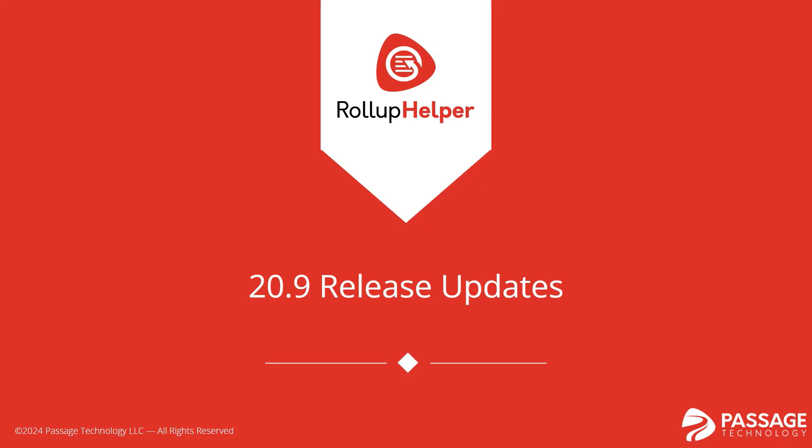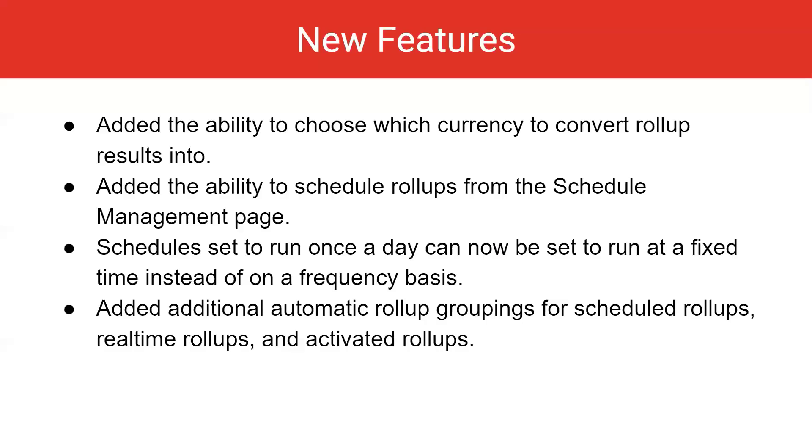Roll-Up Helper version 20.9 is out now. You can manually upgrade from inside the app under the Help and FAQ tab, or wait until the push upgrade that's coming in August. Today, I'm going to highlight some new features and improvements since 19.4. Version 20.9 has six new features.